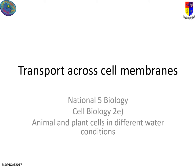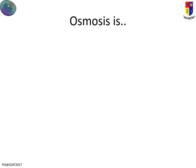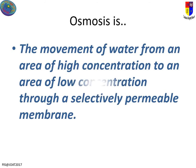Okay folks, this is still transport across cell membranes, but in particular we are now looking at the effect of osmosis on different cells — animal and plant cells. This is probably one of the trickiest bits of content in this key area, so you might need to go through this a few times. First off, you should have this definition down: it is the movement of water from an area of high concentration to an area of low concentration through a selectively permeable membrane.